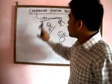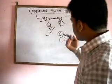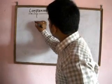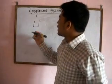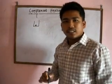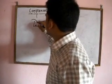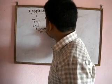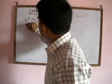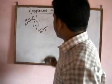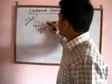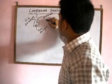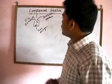This is the basic principle of the complement fixation test. In the test, we first place a known antigen along with an unknown antibody. Along with these, we also add the complement protein.